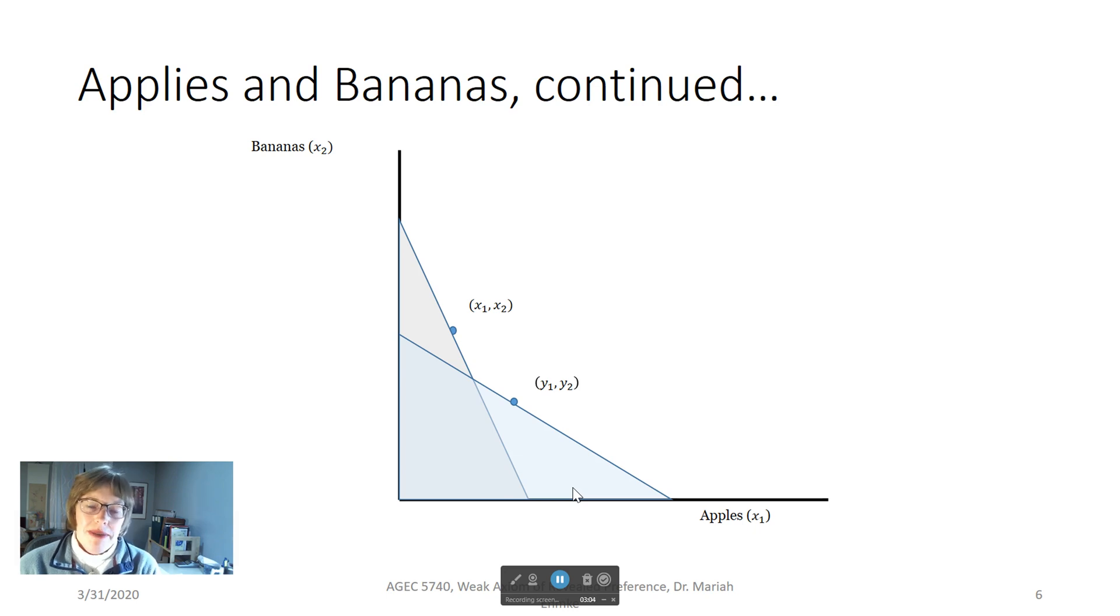What would not make sense is if you didn't take advantage of more apples when they were cheaper. In this case, the X bundle is purchased when the Y bundle is not affordable. Later, the Y bundle is purchased when the X bundle is not affordable. This is the logic underlying the WARP.